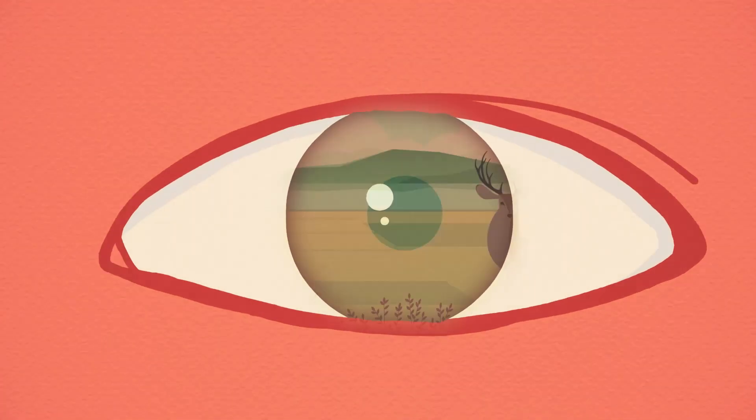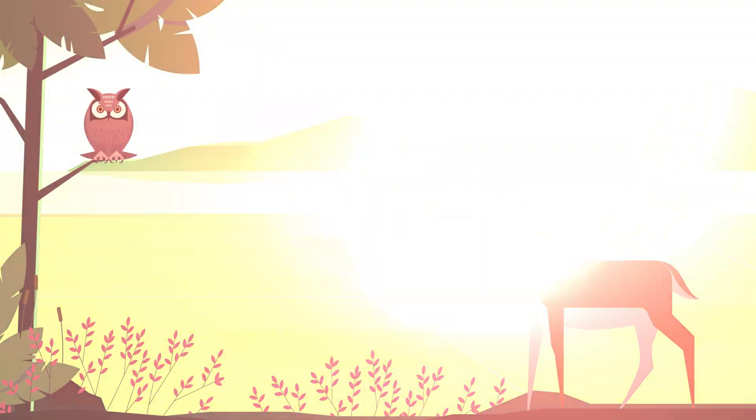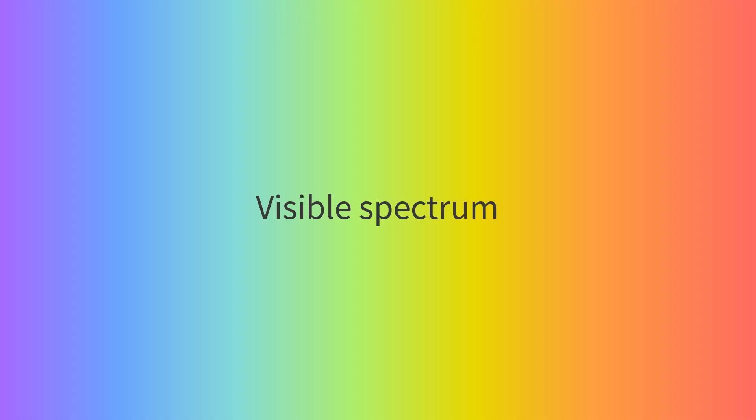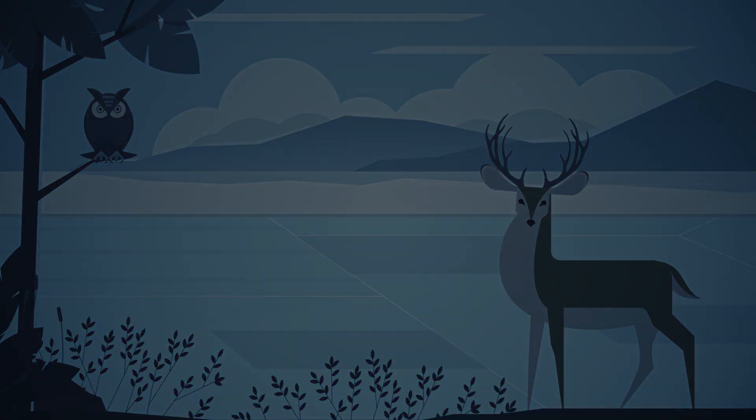As humans, we have sophisticated vision, enabling us to appreciate the beauty and wonder of nature. But actually, what we can see is only a small portion of the electromagnetic spectrum. As a result, we can barely see anything without visible light, for example, at night.